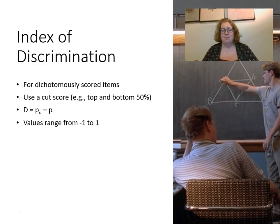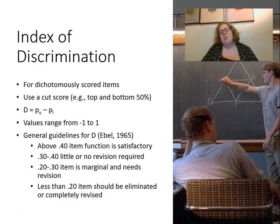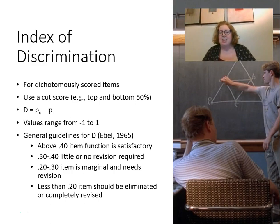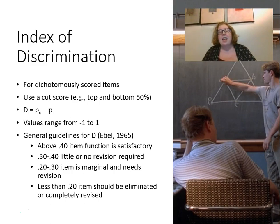The general guidelines are: above 0.4 means the item functions satisfactorily; between 0.3 and 0.4 means little or no revision is necessary; between 0.2 and 0.3 is marginal and might need revision; and anything less than 0.2 means the item should be eliminated or completely revised. That said, these are just guidelines — we'll talk about some exceptions.